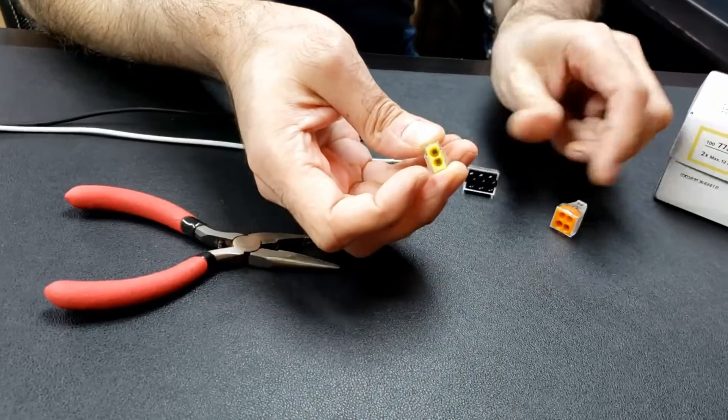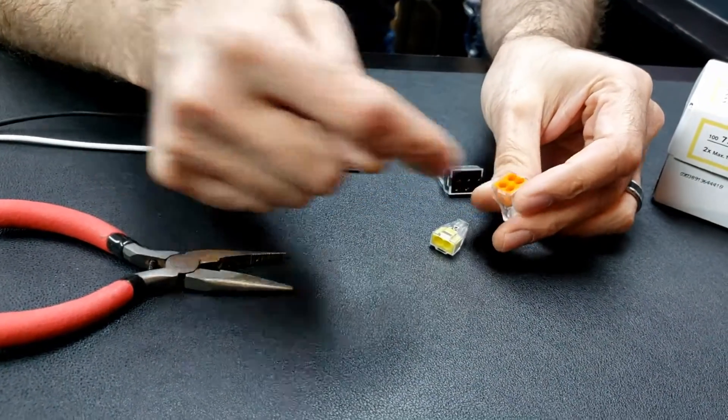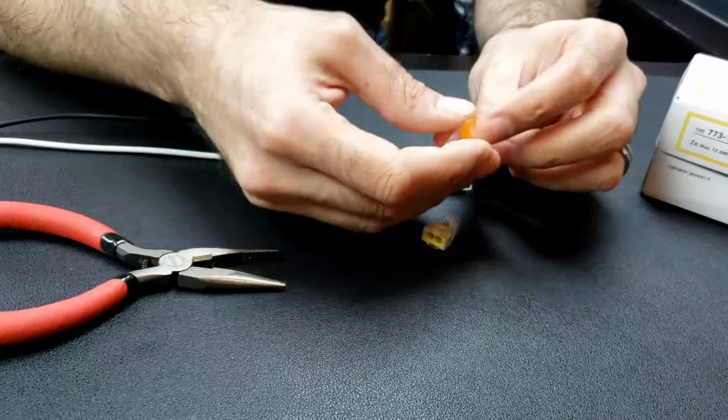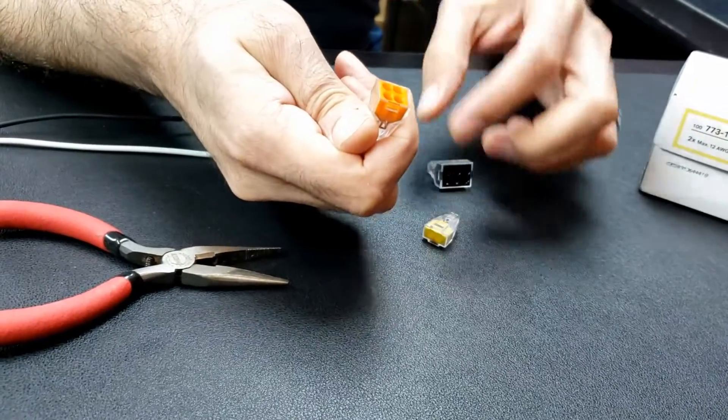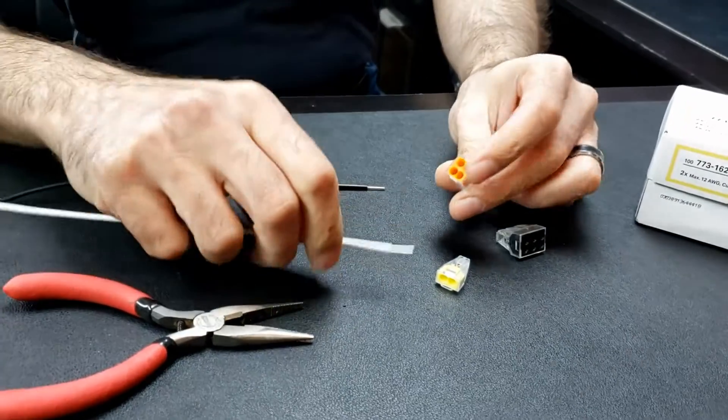They come in varieties like two-way, four-way, six-way, eight-way—that's just however many spots you have for connections. These are kind of like a wire nut where you're grouping all the wires together electrically, so it's really easy.